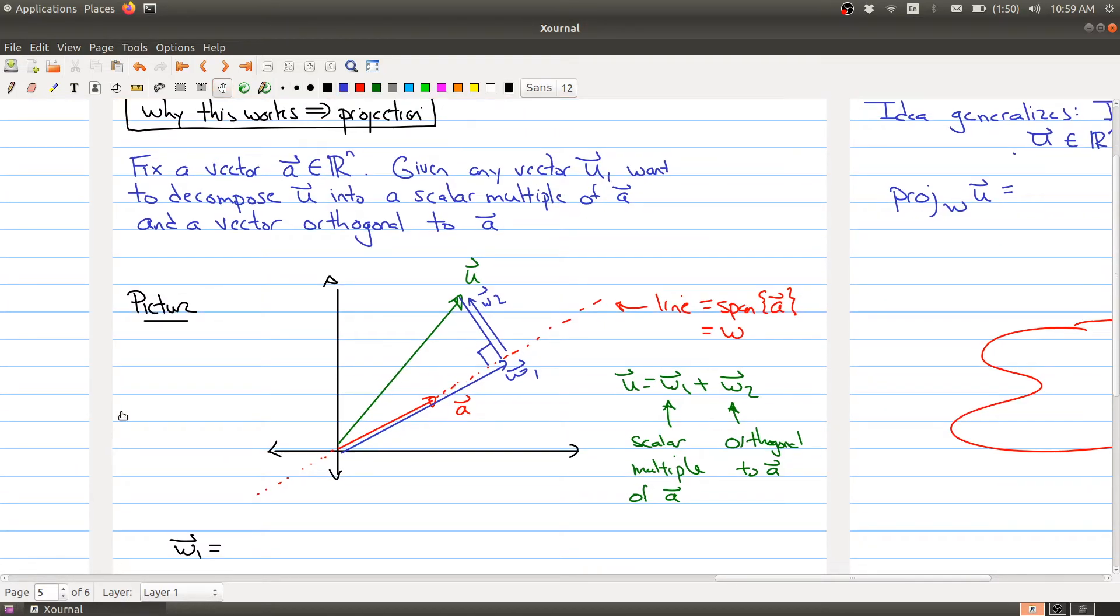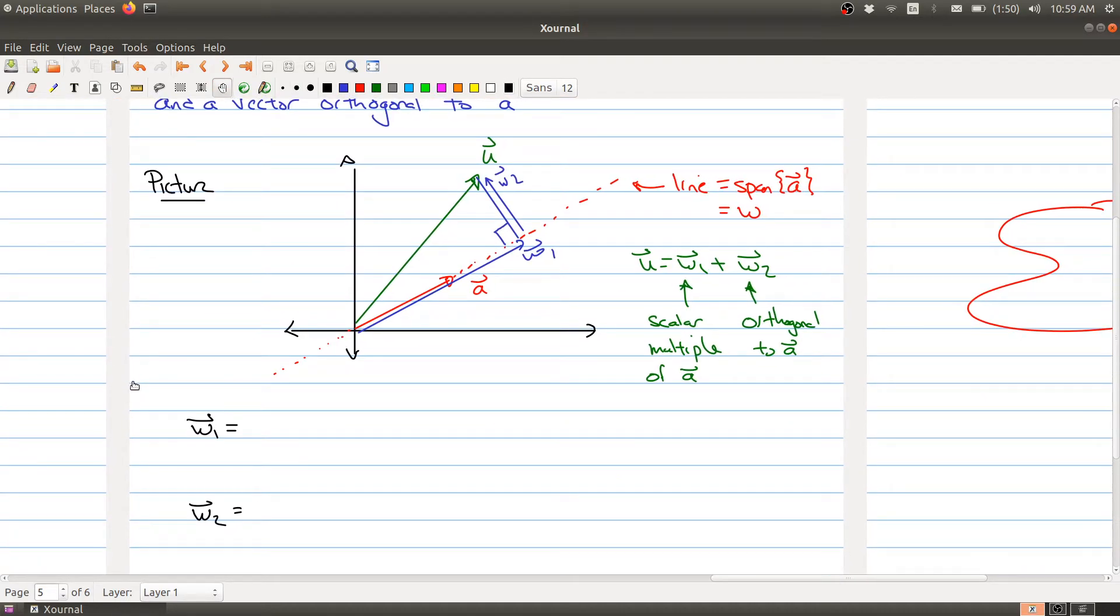So w1 is called the orthogonal projection of u onto w, which is equal to the span of the vector a. And sometimes we just write it as this way: the projection onto w of u.